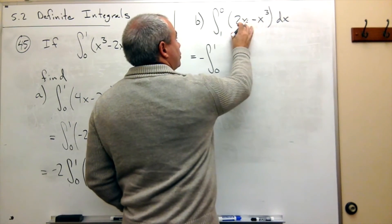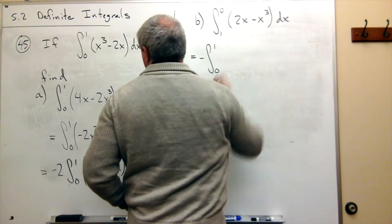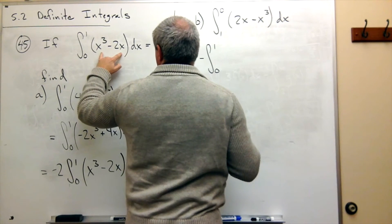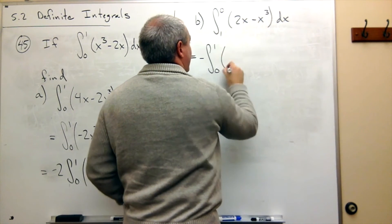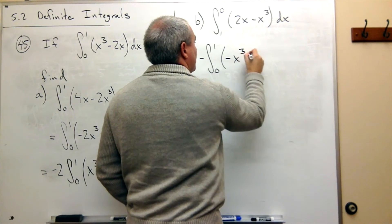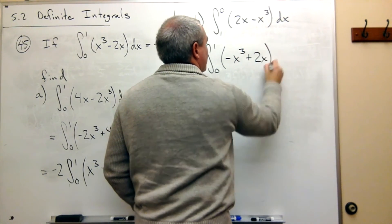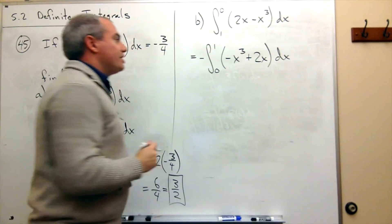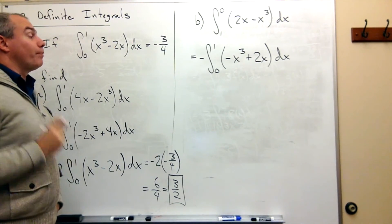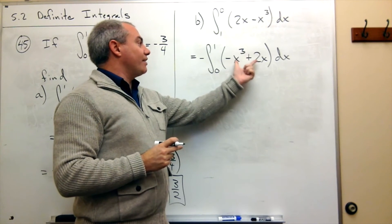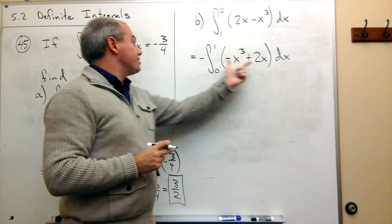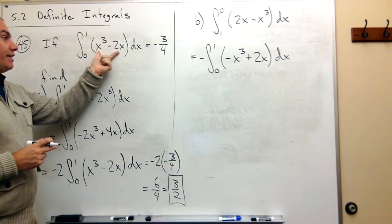Now, inside, I have 2x minus x cubed, which is close to what I have here, but they're written in the wrong order. So let's reverse it, and it's negative x cubed plus 2x dx, which isn't exactly what I'm looking for, but it is close. What I need to do is I need to factor a negative 1 out of these two to make it look like this.